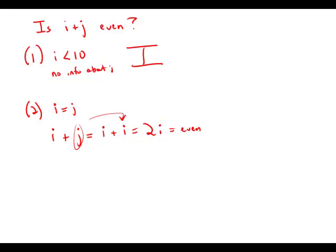So this means that if we know that i and j are equal, then we can definitively answer the question: is i plus j even? And so this is sufficient information. Well, statement number one is insufficient, statement number two is sufficient. Answer choice B.